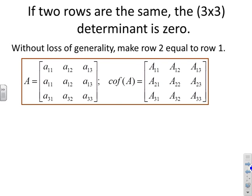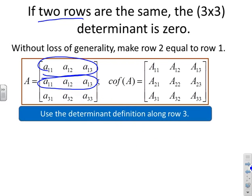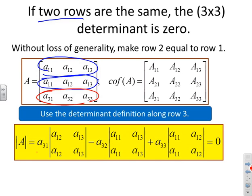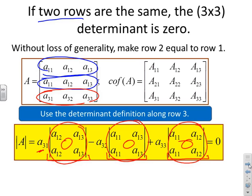You could do the same if you made both columns equal. For a three-by-three, with rows one and two identical, if we expand along row three using the definition — coefficient a31 times its cofactor, a32 times its cofactor, and so on — all those cofactors are two-by-two matrices with identical rows, and therefore all of them are zero, so the overall determinant must be zero.